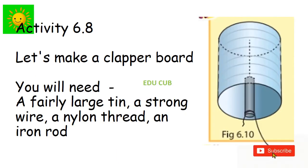Next one, let's make a clapperboard. You will need a fairly large tin, a strong wire, a nylon thread and an iron rod. Make a hole at the bottom of the tin. Send the wire through the hole and hang the iron rod as given in the figure. Tie the nylon thread at the end of the iron rod and shake it. You can hear the sound by using this instrument.